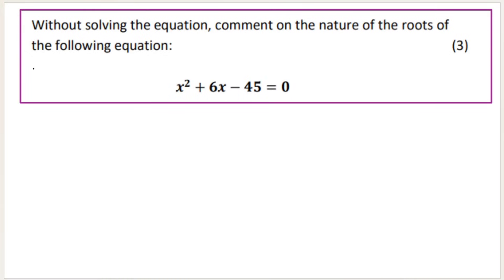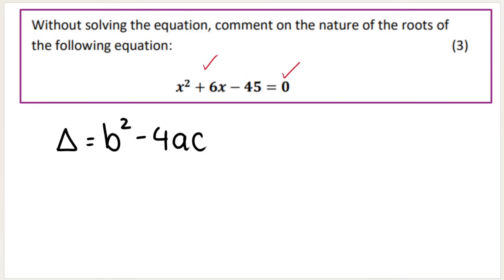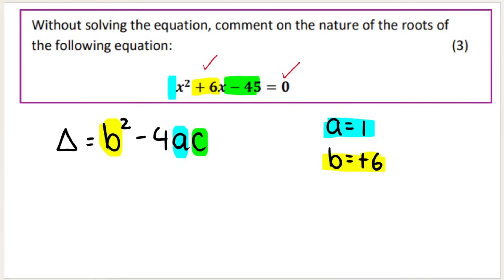So let's do this past paper question: without solving the equation, comment on the nature of the roots. Write down your discriminant formula — it comes from the quadratic equation. Check: is this in standard form? Yes, it's equal to zero and in descending powers of x. So a is one, b is positive six — please remember it's with the sign — and c is negative forty-five. The sign is very, very important.